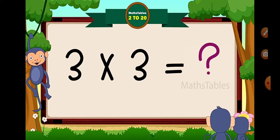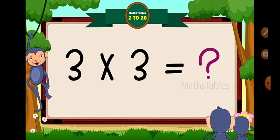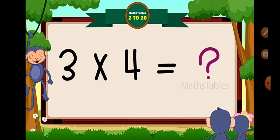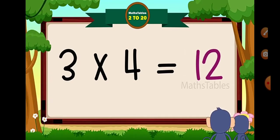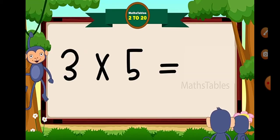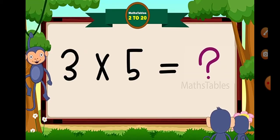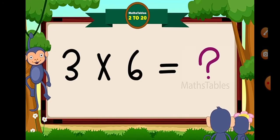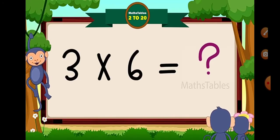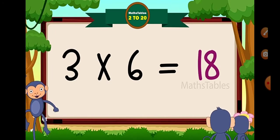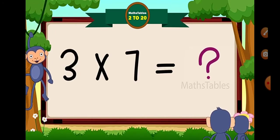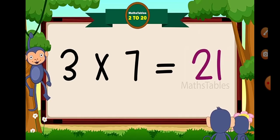3 × 3 = 9. 3 × 4 = 12. 3 × 5 = 15. 3 × 6 = 18. 3 × 7 = 21.